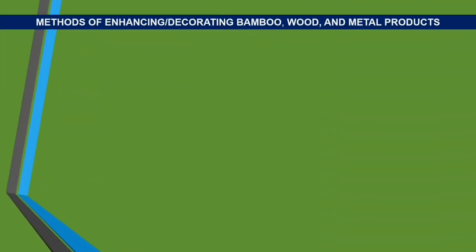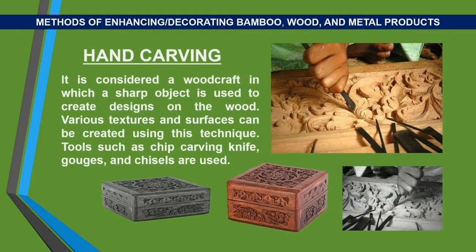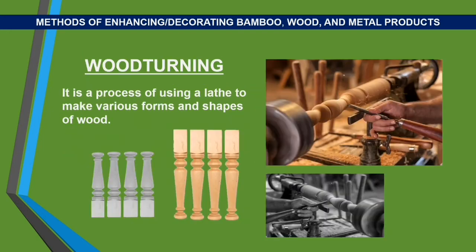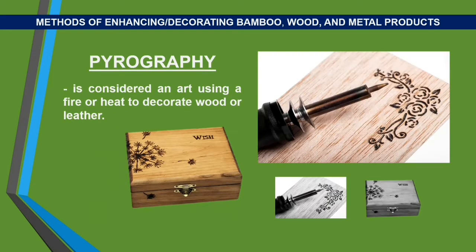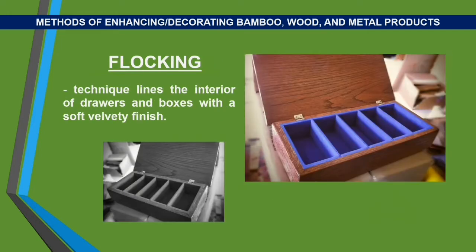Methods of enhancing and decorating bamboo, wood, and metal products. Hand carving is considered a woodcraft in which a sharp object is used to create designs on the wood; various textures and surfaces can be created using this technique. Tools such as chip carving knife, gouges, and chisels are used. Wood turning is a process of using a lathe to make various forms and shapes of wood. Pyrography is considered an art using fire or heat to decorate wood or leather. Flocking technique lines the interior of drawers and boxes with a soft velvety finish.